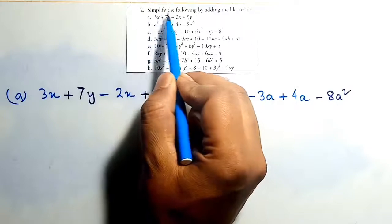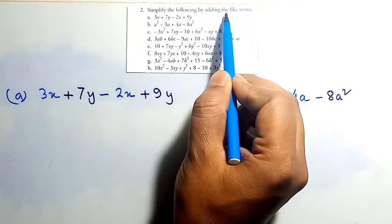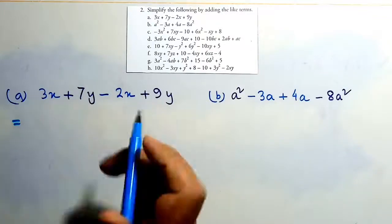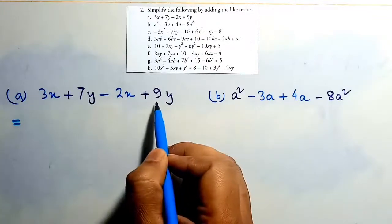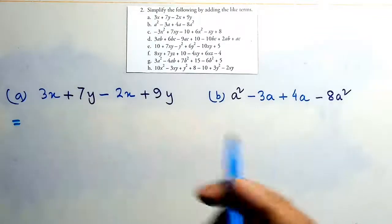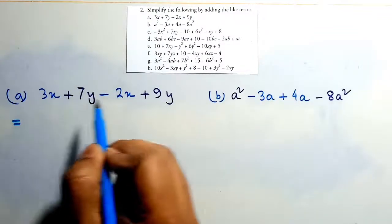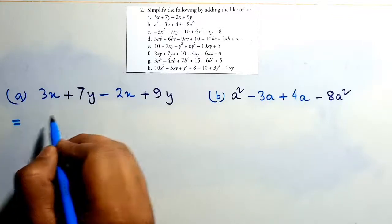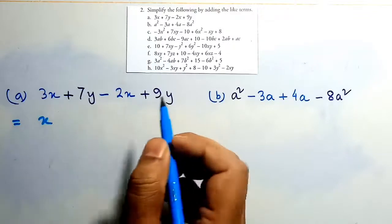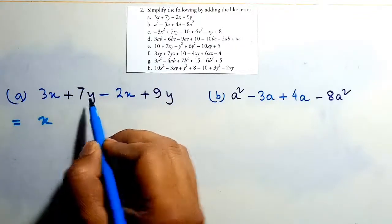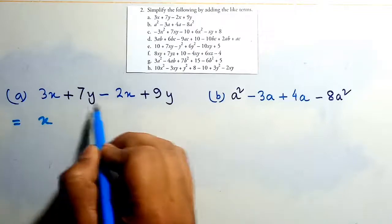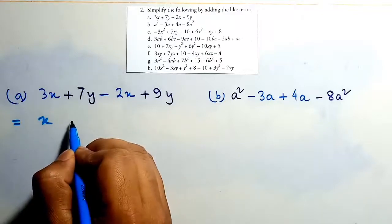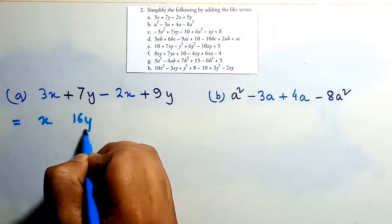Question 2: simplify the following by adding the like terms. Here, 3x minus 2x are like terms, and 7y plus 9y are like terms. When you subtract minus 2x from 3x the value is x, and 7y plus 9y — both are positive — gives 16y.